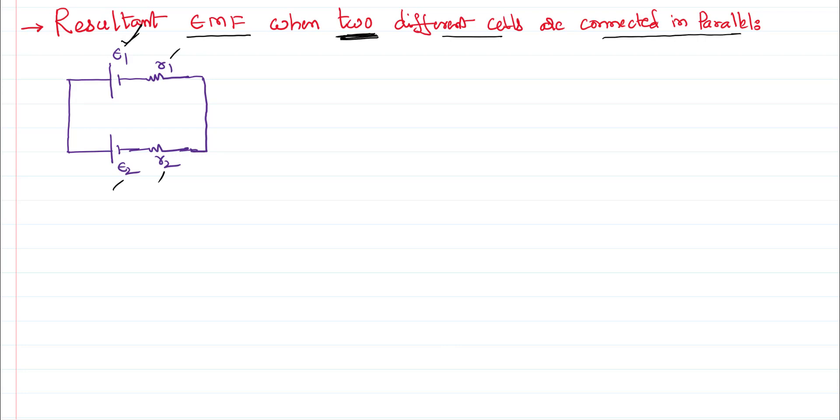Then what is the total EMF of this circuit is the kind of question that's asked. We can say the total current generated in this circuit is current across the first internal resistance of the first cell and current across the internal resistance of the second cell.